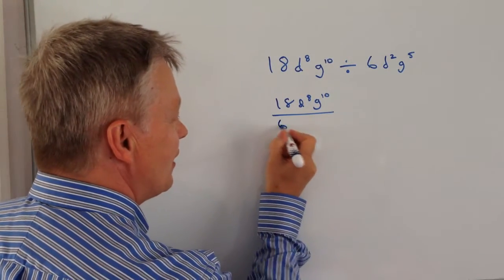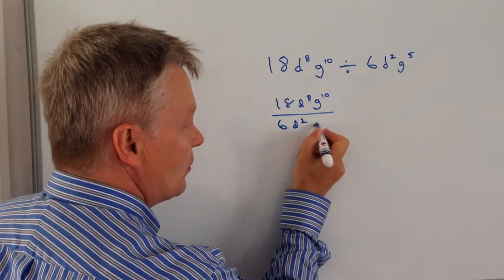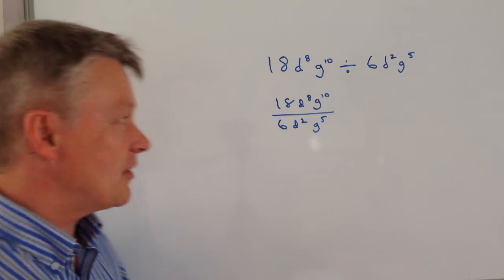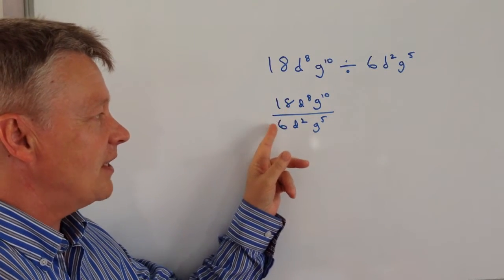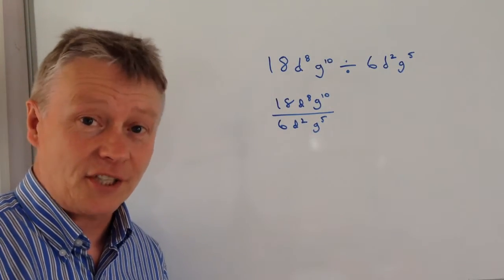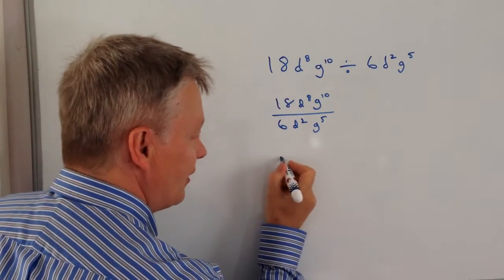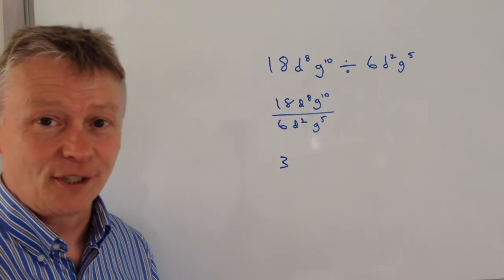It just makes things a little bit easier to see because we're dealing with the laws of indices here as well. So the first thing I'm going to do is I've got 18 divided by 6. Well that's just 3 because 6 goes into 18 three times, so that's absolutely fine.